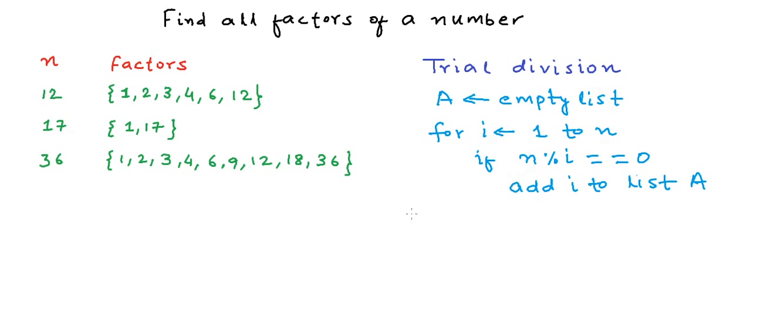Now there is a simple observation here. A number is always divided by 1 and itself. Apart from 1 and itself, the smallest factor that it can have is 2, and the largest factor that it can have will be n by 2. There would be no factor of n other than n itself after n by 2. So we can improve this algorithm a little here. Instead of starting with an empty list, we start with 1 and n already in the list, and then we can run our loop through 2 to n by 2. We do not run the loop all the way till n. This is definitely better than running the loop till n.